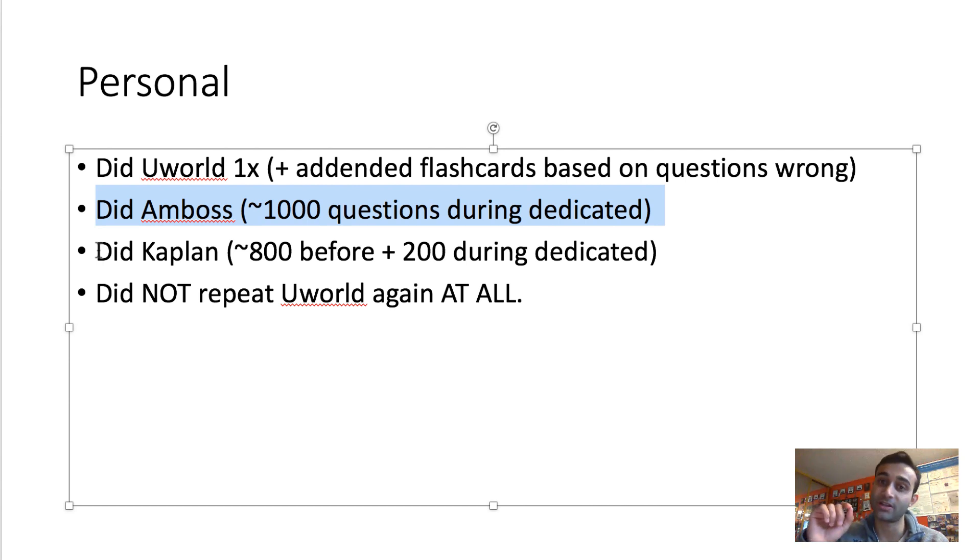And I did about a thousand questions during dedicated with Amboss. But the reason Amboss was different was because Amboss, I did untimed. I did it right away. I did it in the format where you do a question and you find out the answer right away. And I also did it with very little pressure. Like I would be doing Amboss questions in the car.